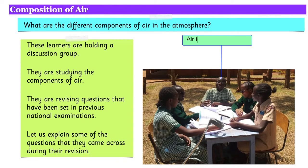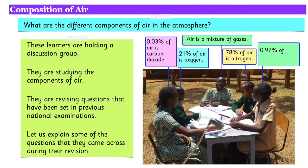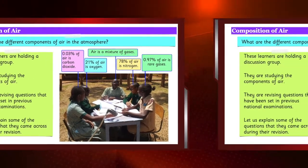Air is a mixture of gases. The components of air include the following: about 0.03% of air is carbon dioxide, about 21% of air is oxygen, about 78% of air is nitrogen, and about 0.97% of air is rare gases.